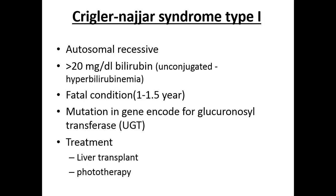Along with jaundice and basic symptoms and signs, we can diagnose the case. For differential diagnosis, we mainly require blood investigation. Based on which type of bilirubin is increased, we can differentiate whether the cause lies in the pre-hepatic, hepatic, or post-hepatic system.